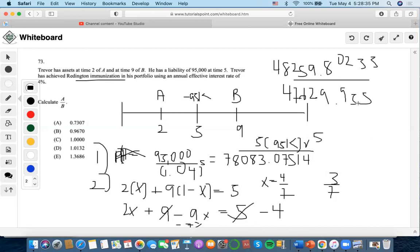So now let's divide both. 48,259.80233 divided by 47,629.955. So the answer is going to be 1.01322376, which will make D the answer.